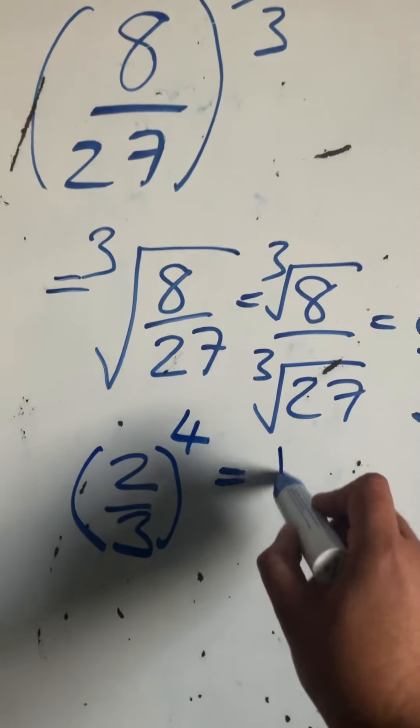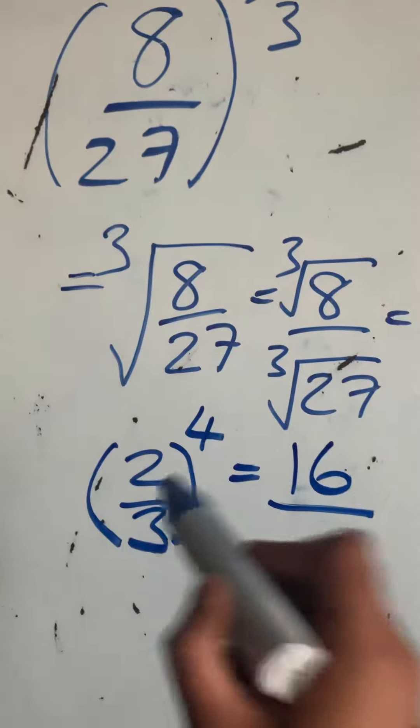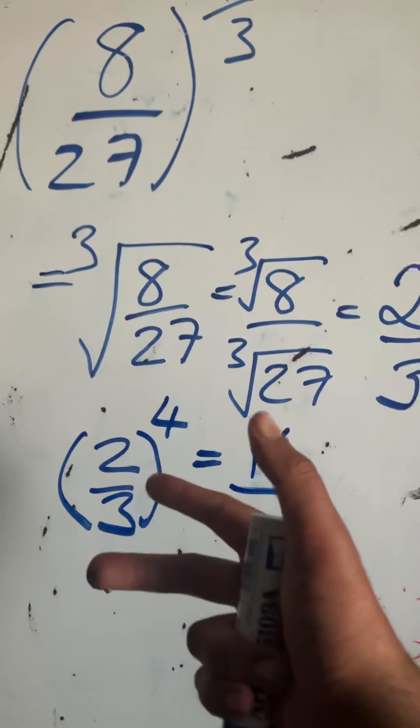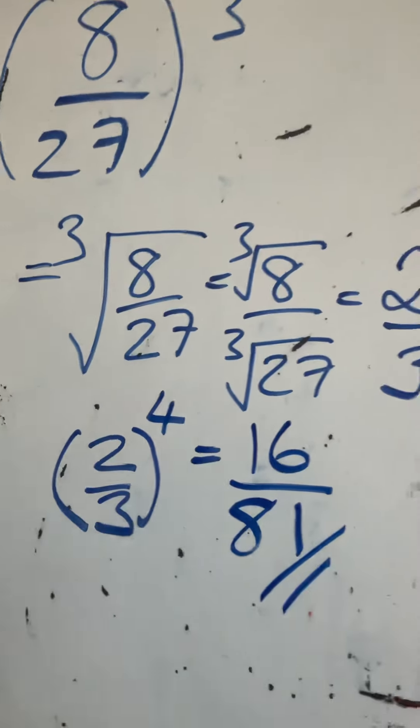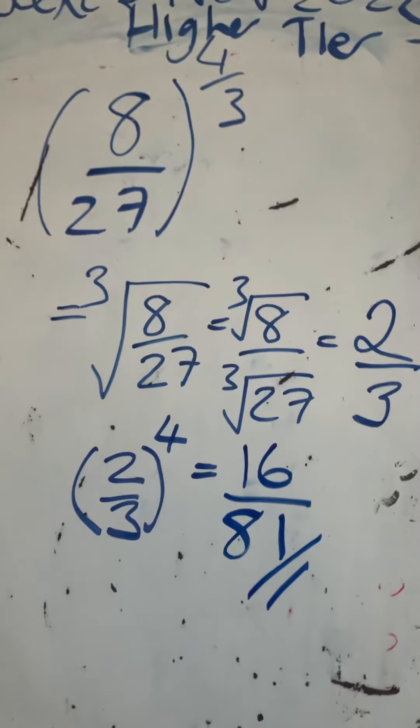I'm going to have 3 to the power of 4, which is 3×3×3×3 = 81. So my final answer is 16/81, and that was worth 2 marks.